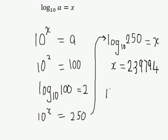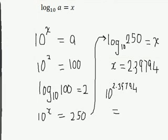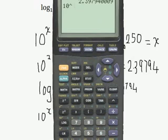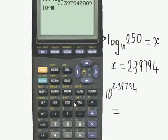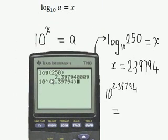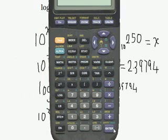So now what we would do is if we were to say 10 to the power of x and put that value in here, 2.39794, that should give us 250. So let's try it. We'll bring the calculator back. What we do is say 10, raise it to the power of 2.39794. So that's what I've done here, 10 to the power of that value.